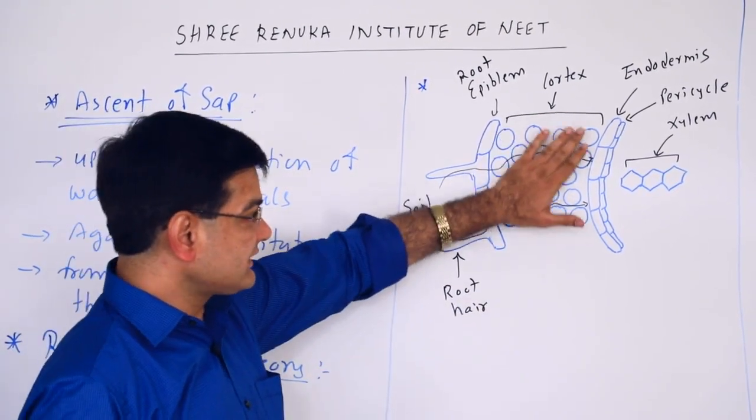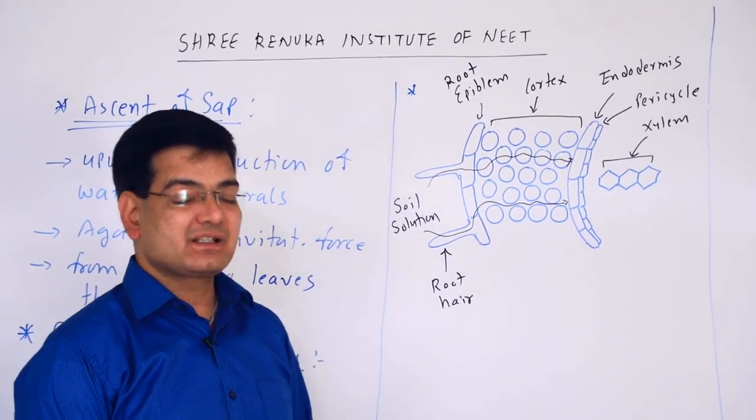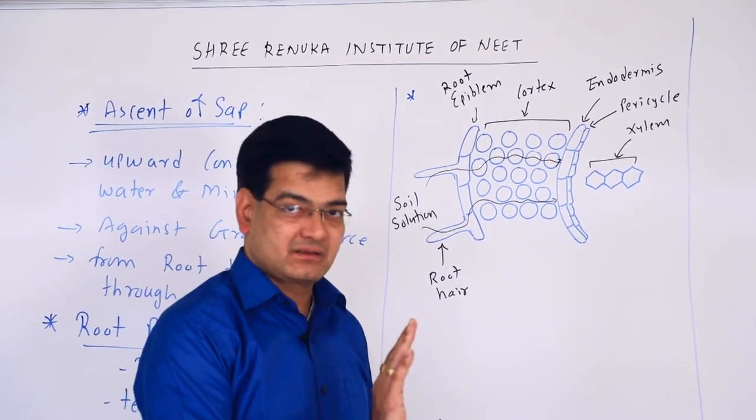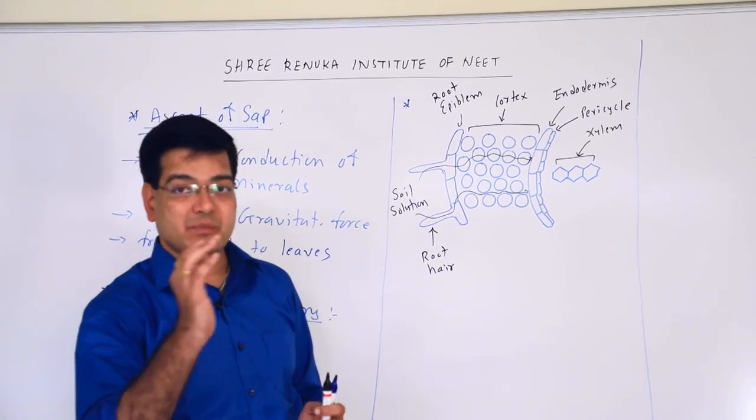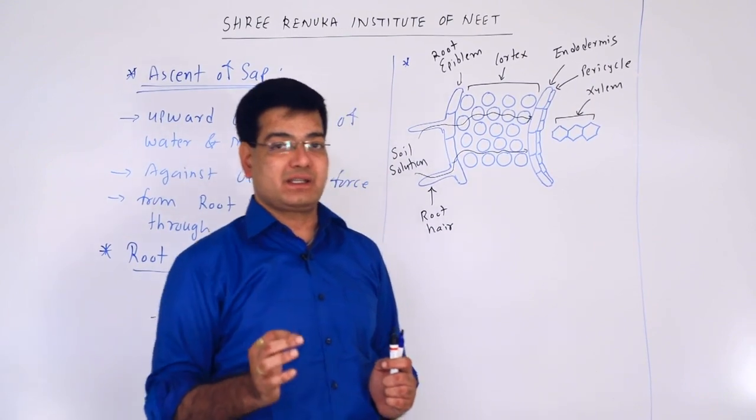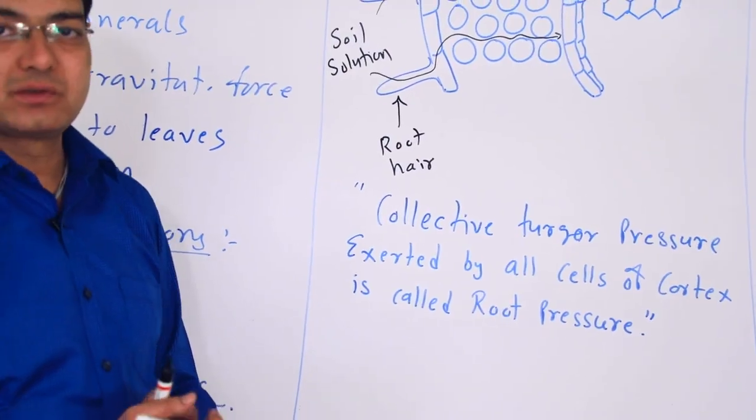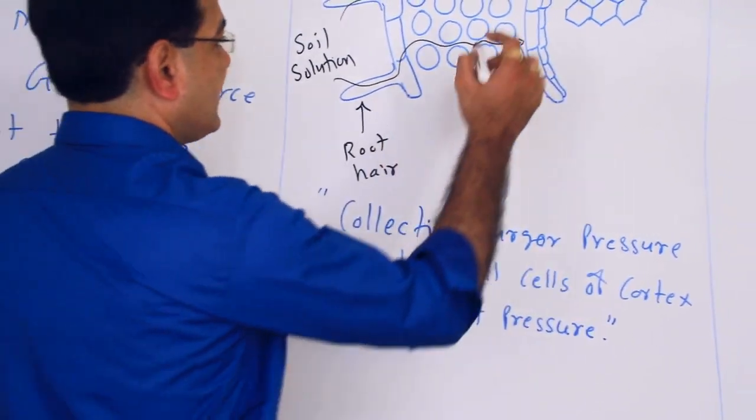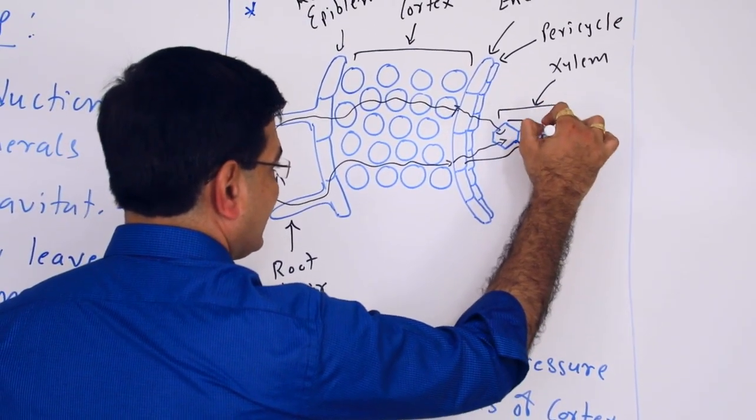When all the cells of the cortex become turgid, they exert pressure on the endodermis. This collective turgor pressure exerted by all cells of the cortex on the endodermis is the root pressure. Due to this root pressure, water enters into the xylem elements.